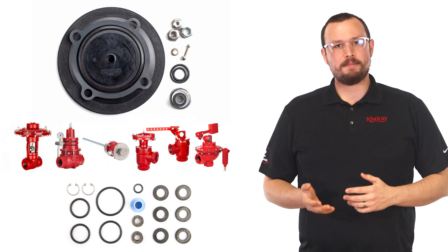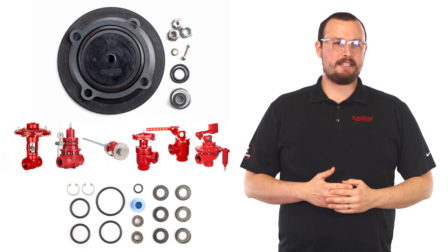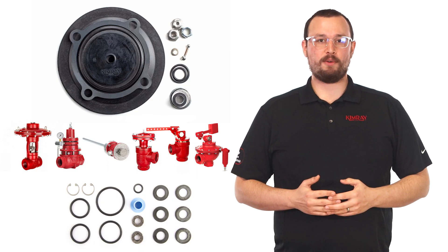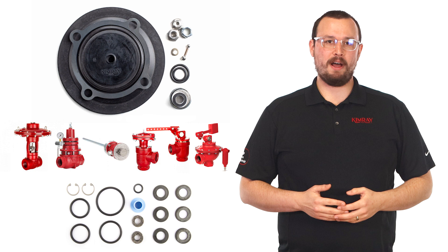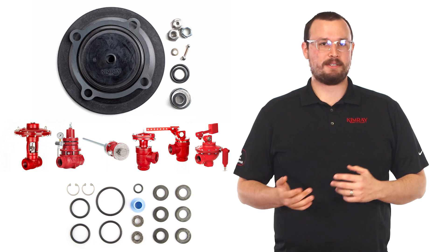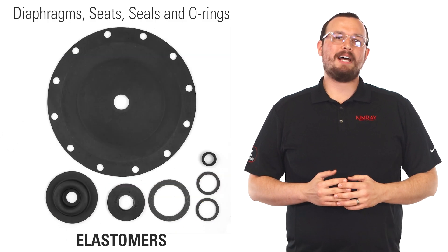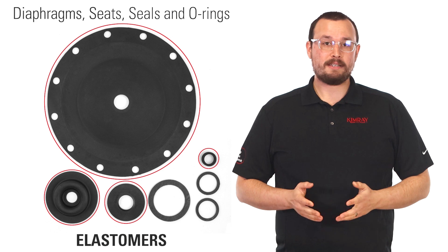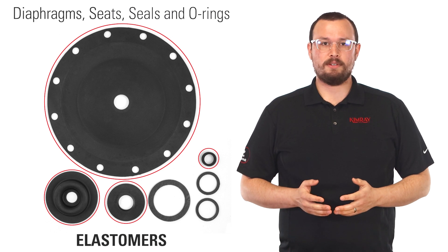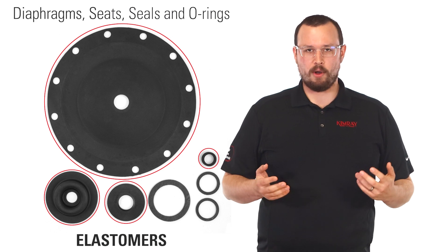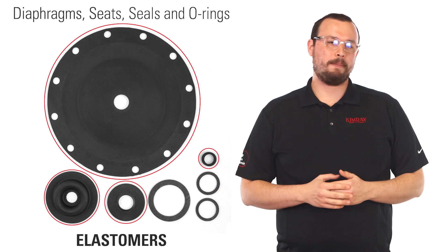Today we're talking about small but critical pieces used in most oil and gas controlled equipment. Diaphragms, seats, seals, and o-rings all play an important role in control valves, regulators, and temperature controllers. They're made from different types of rubber materials called elastomers. You also hear them called soft goods or rubber goods.